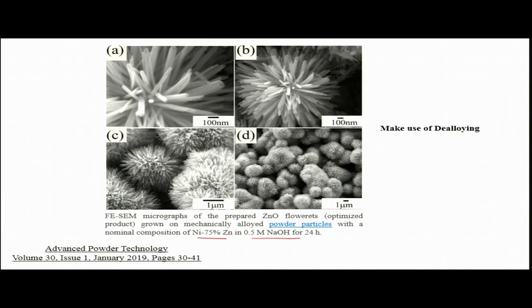So, starting with the dealloying concept we could get zinc oxide flowerets on top of a nickel core, break open the zinc oxide nanorods, and use those nanorods for cracking methylene blue. This kind of application shows you can actually make use of some bad things and turn them into something good.